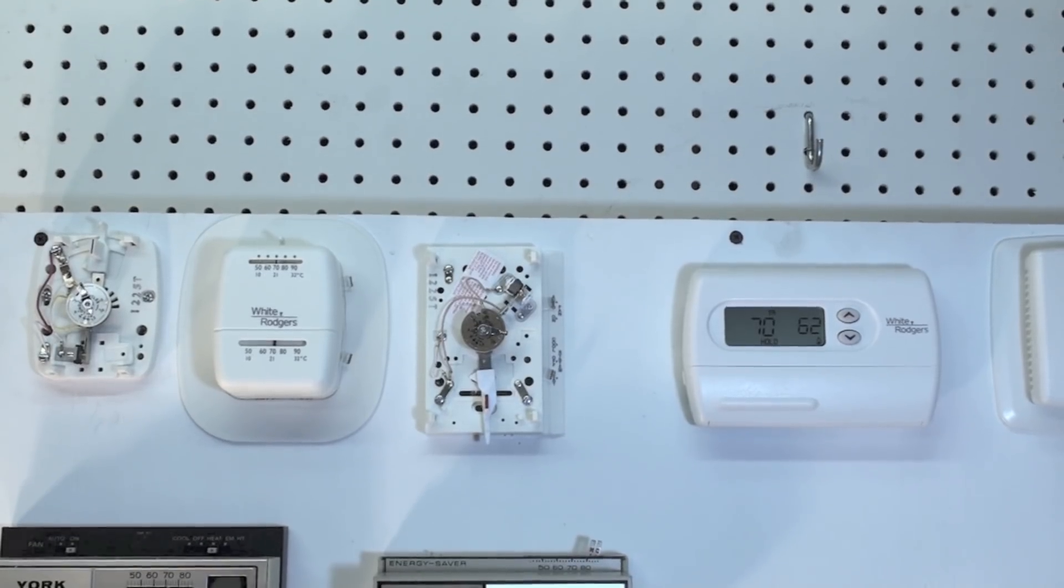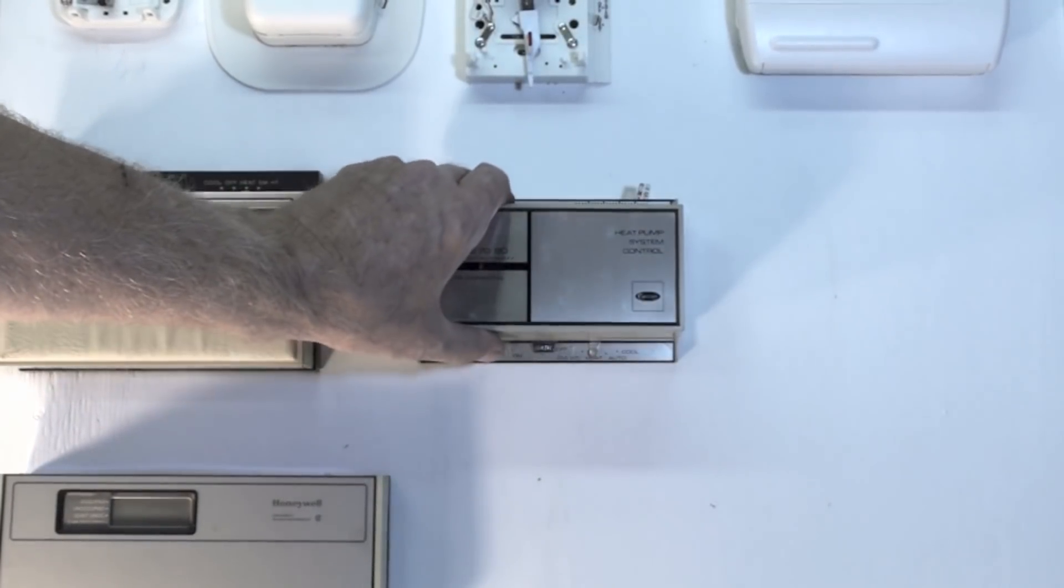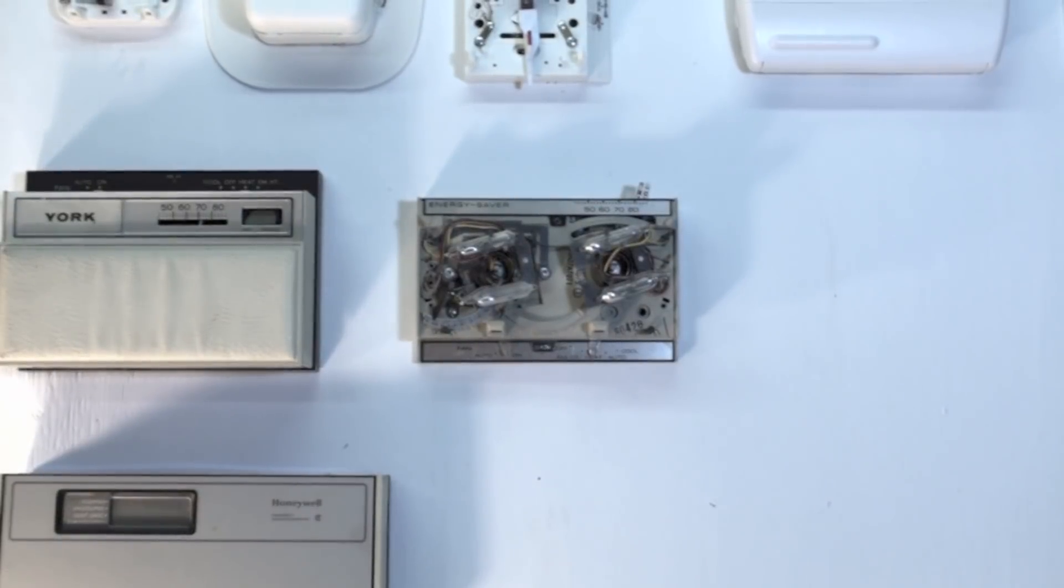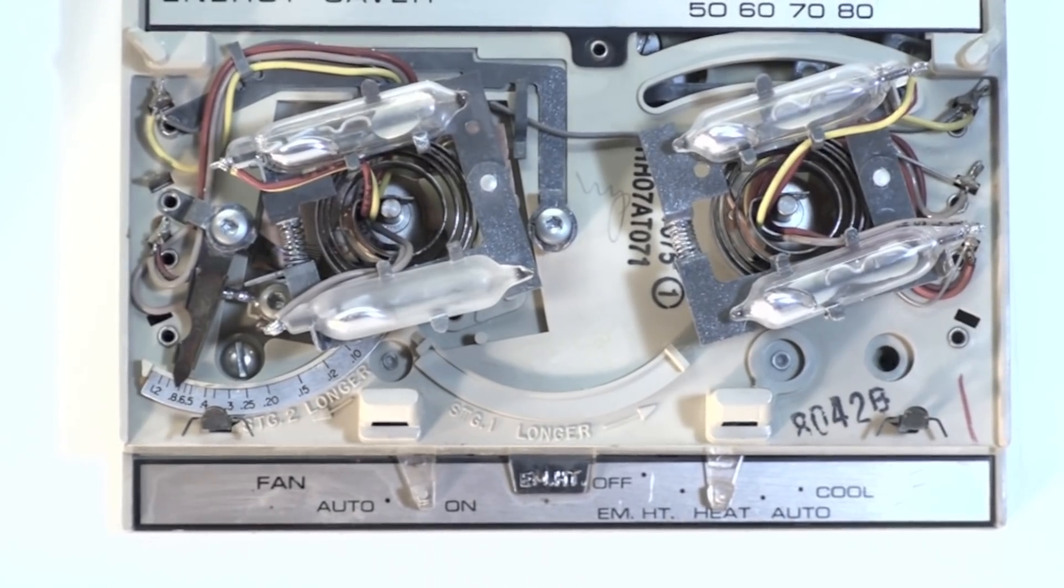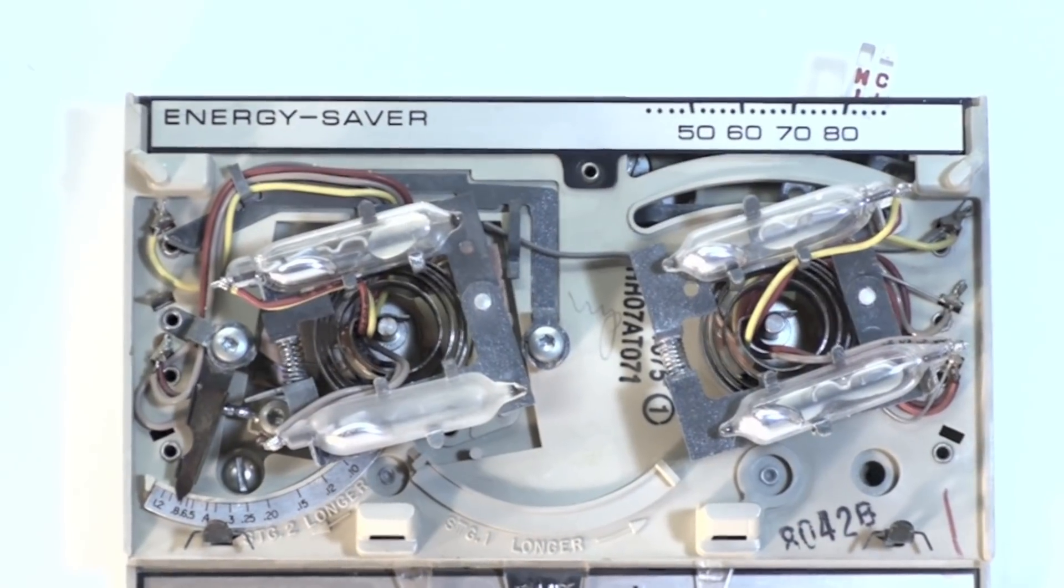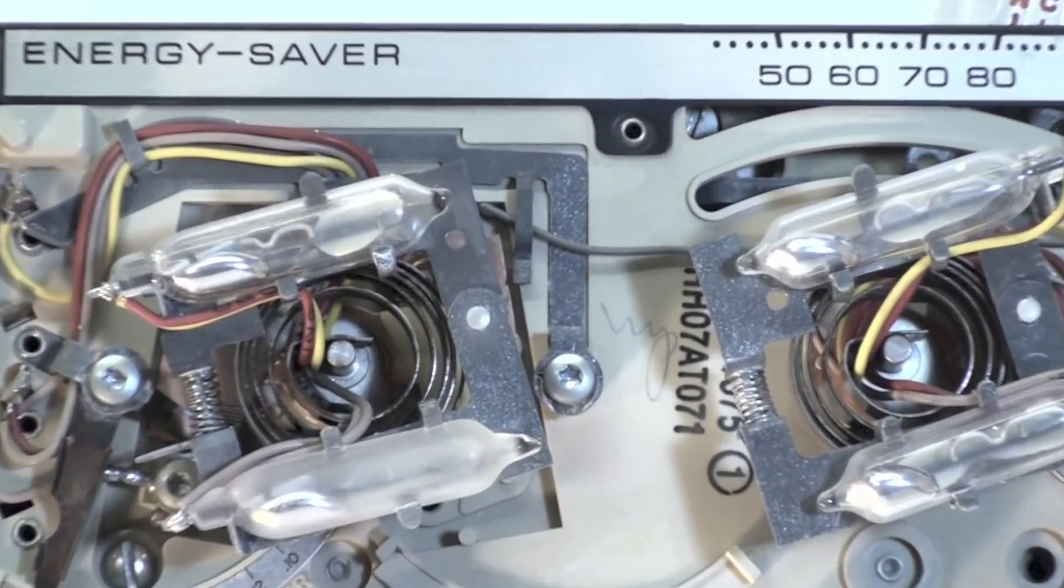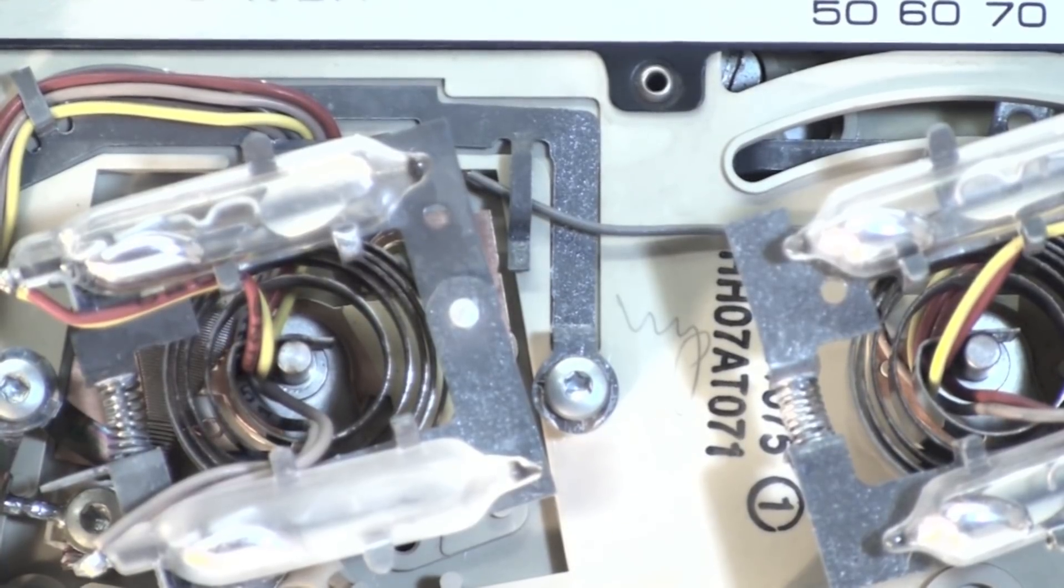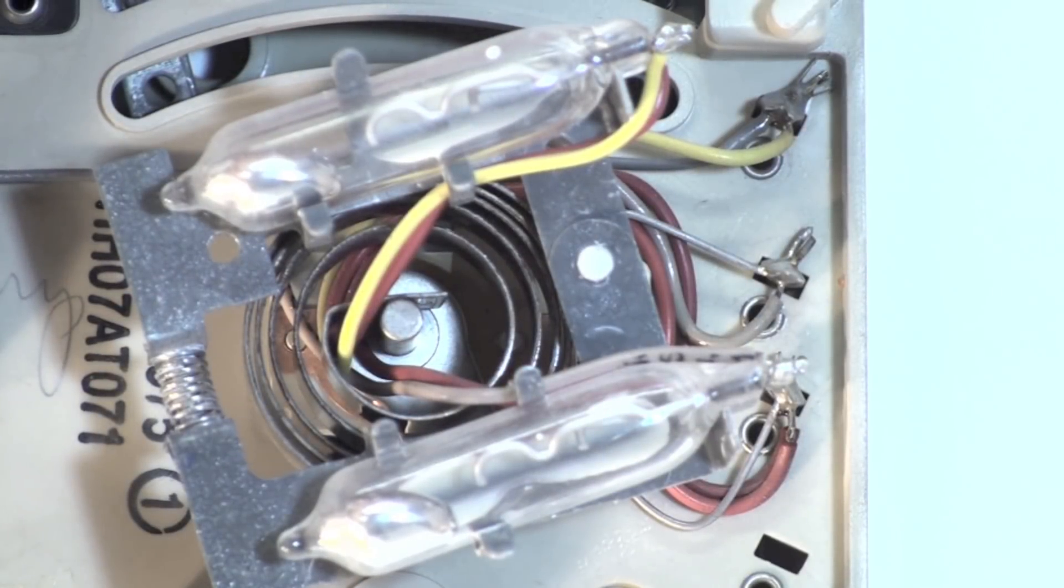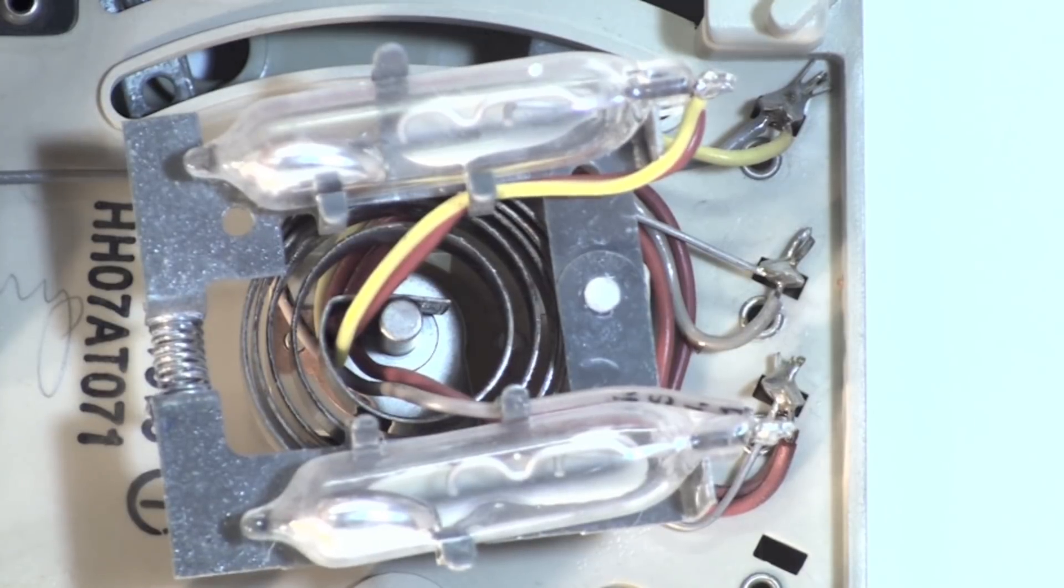I wanted to show you one more thermostat while I was here. This thermostat here is a Honeywell even though it says Carrier now. This one has mercury bulbs. I'm going to show you how these mercury bulbs work. I'm going to be moving this lever up, which is going to change the temperature, and you can see that mercury.